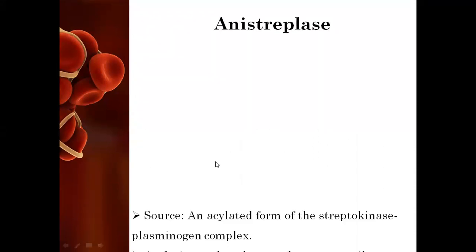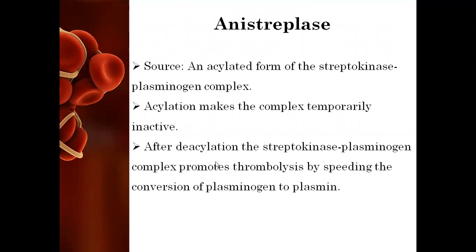The next is anistreplase. Anistreplase is an acylated form of the streptokinase-plasminogen complex. It works indirectly by the same track — it causes acylation which makes the complex temporarily inactive. After deacylation, the streptokinase-plasminogen complex promotes thrombolysis by speeding the conversion of plasminogen to plasmin. So again, it is an indirectly acting drug.